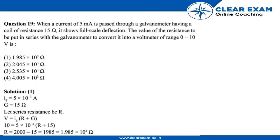The value of the resistance to be put in series with the galvanometer to convert it into a voltmeter of range 0 to 10 volts is: (1) 1.985 × 10³ ohms, (2) 2.045 × 10³ ohms, (3) 2.535 × 10³ ohms,